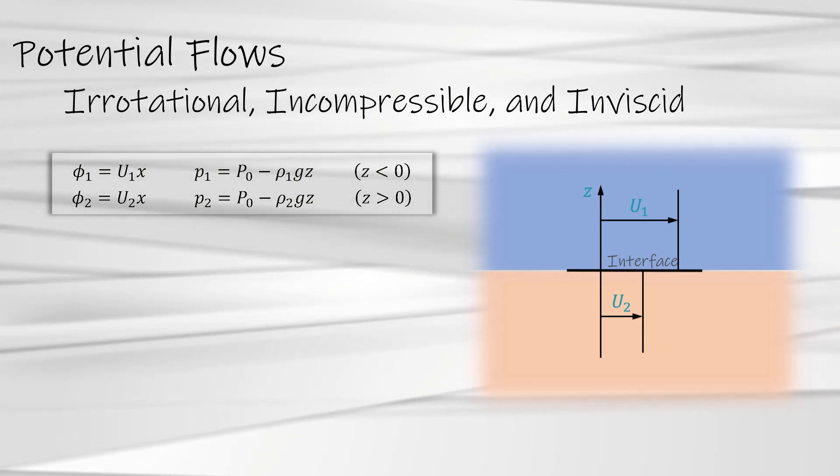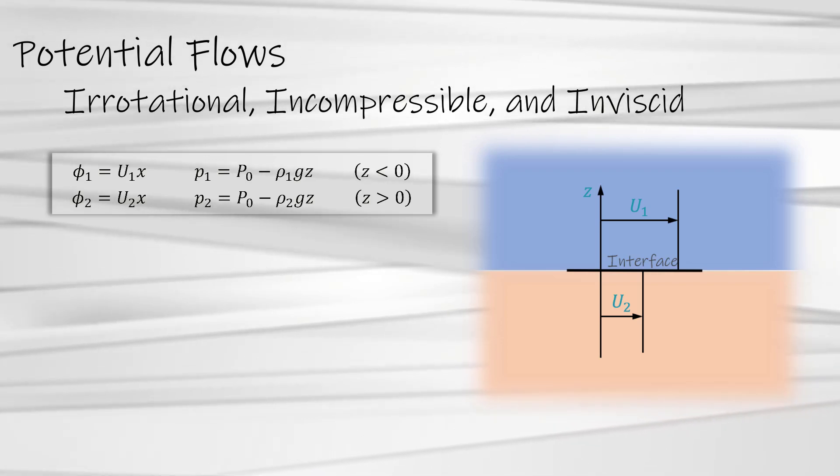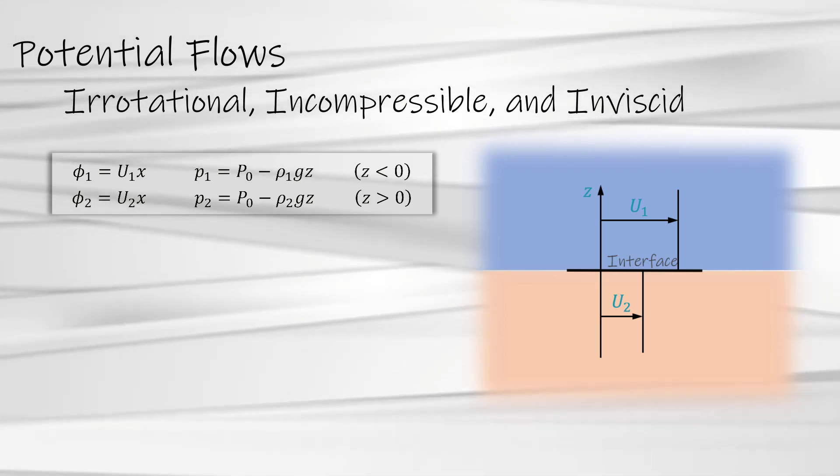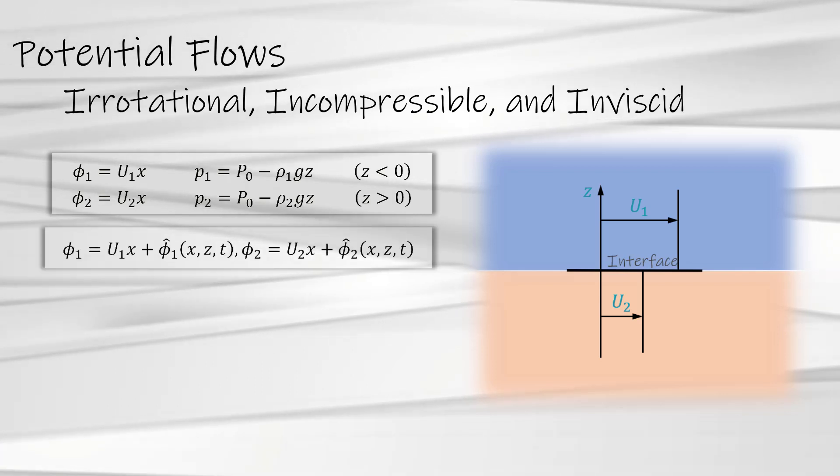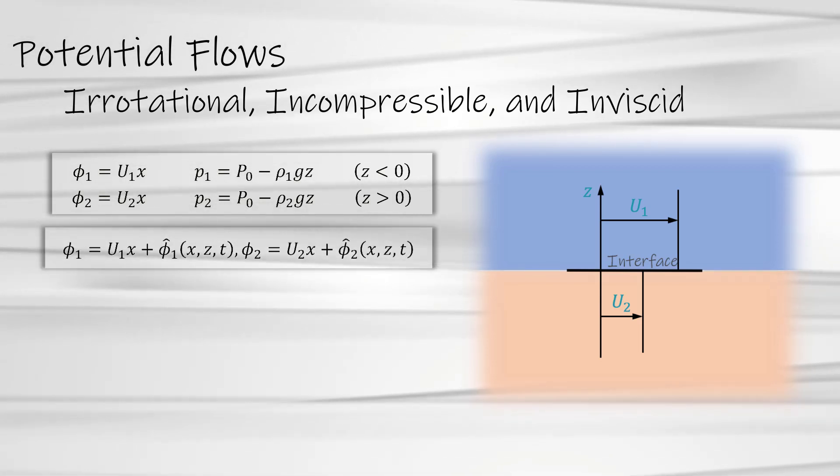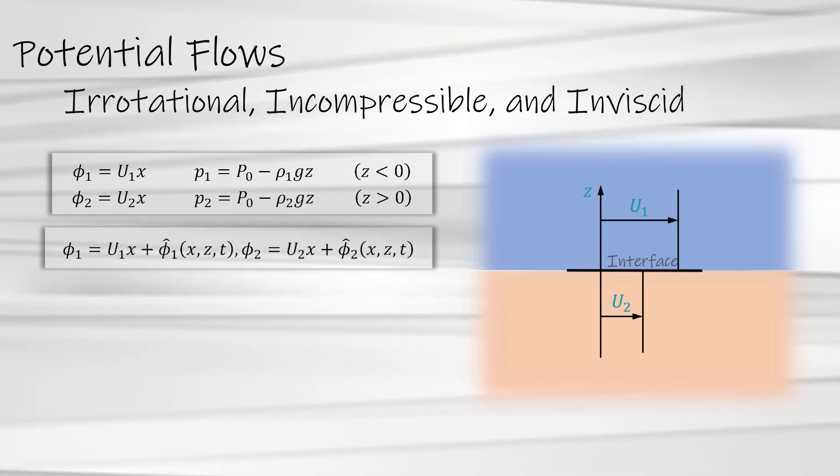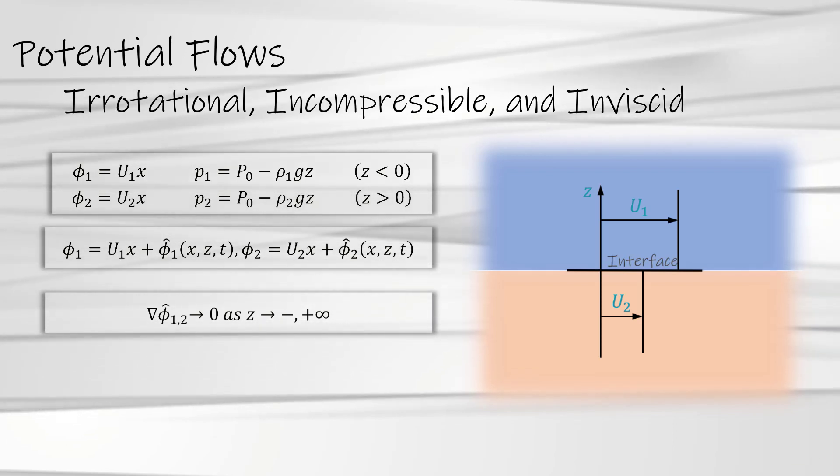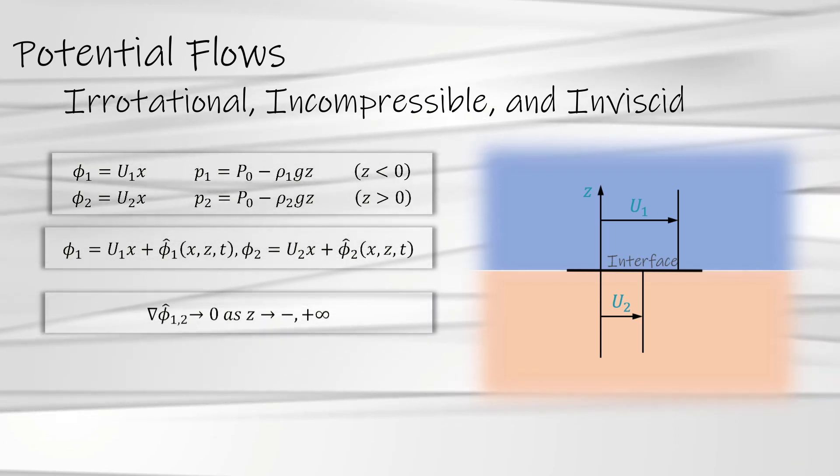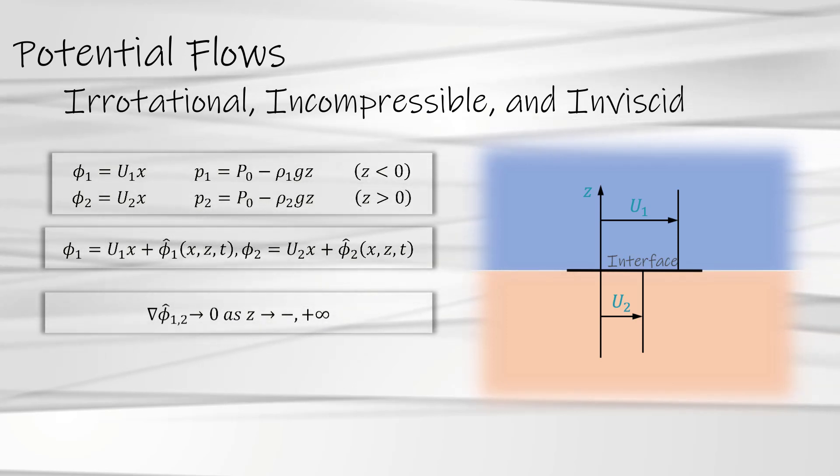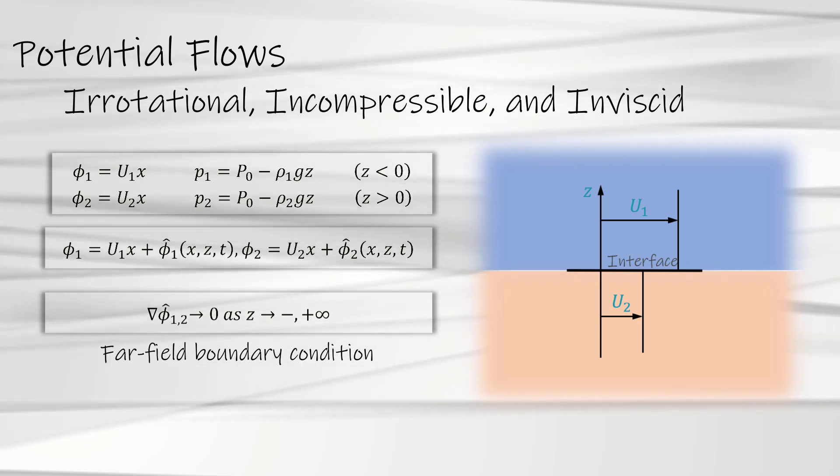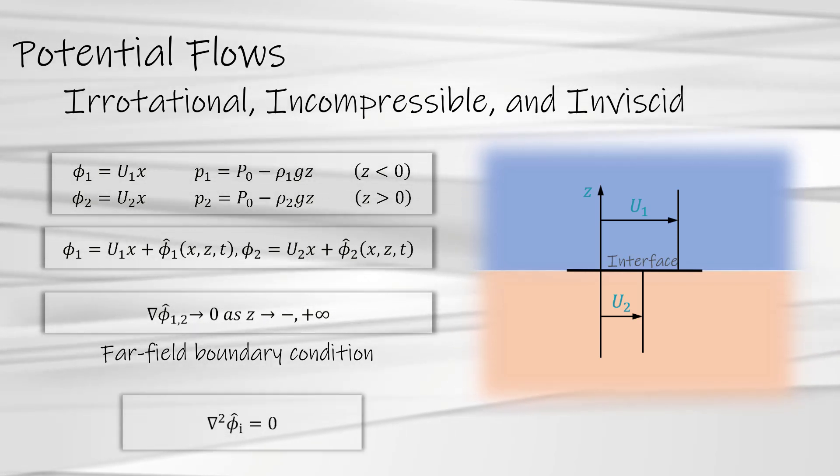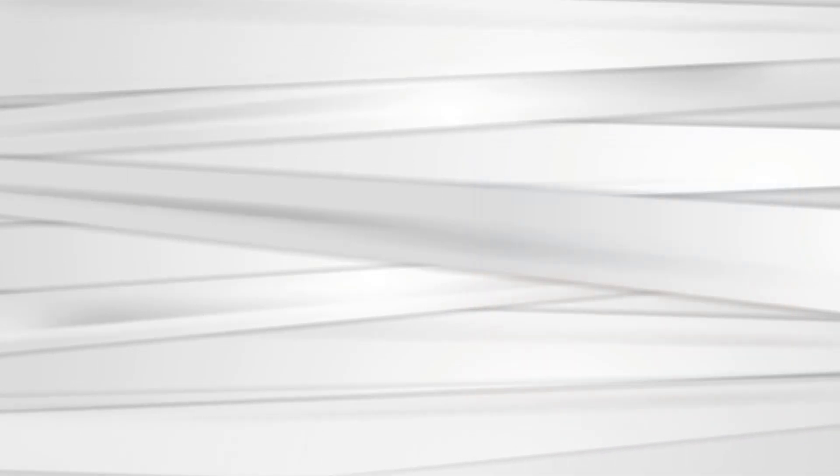Following our established procedure for the small disturbance analysis, let us now impose a perturbation of the following form for both the velocity potential equations. We will impose that the disturbances are finite only at the interface and can be neglected far away from the interface. This assumption is basically our far-field boundary condition. It is easy to show that the disturbances also satisfy the Laplace equation. Due to the perturbation, the interface is also disturbed to the form shown here.